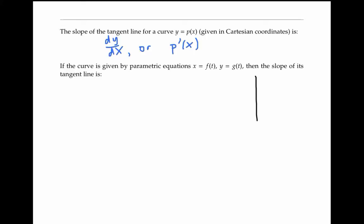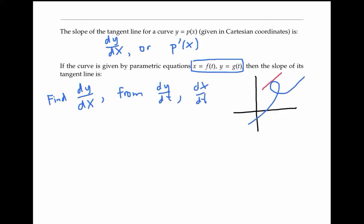If the curve is defined parametrically by the equations x = f(t), y = g(t), to find the slope of the tangent line, we still want to find dy/dx. But since our curve is given parametrically, we don't have ready access to dy/dx. Instead, we'll need to calculate it from dy/dt and dx/dt, which are easy to get from our parametric equations.